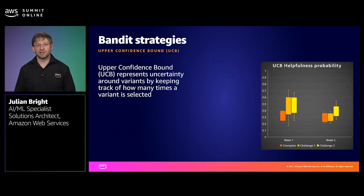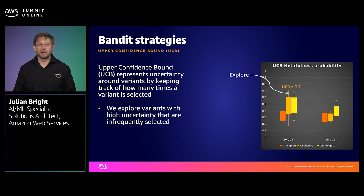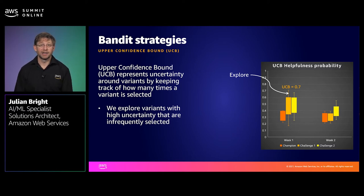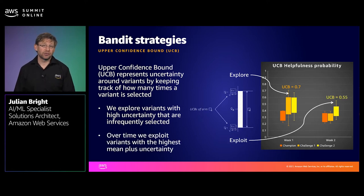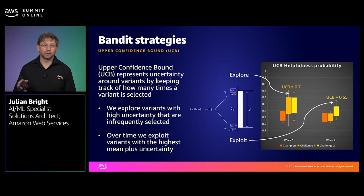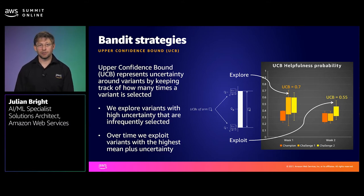The upper confidence bound algorithm represents uncertainty around variants by keeping track of how many times a variant is selected. Initially, we explore variants with high uncertainty that have been infrequently selected, which at the end of week one means Challenger 1 is more likely to be selected due to a higher upper confidence bound of 0.7. Then in week two, uncertainty levels drop and we exploit the variants with the highest mean plus uncertainty, which puts Challenger 2 ahead with an upper confidence bound of 0.5. It's worth noting that the UCB algorithm is deterministic as it doesn't include any randomness at all, so it will quickly settle for a clear winner.